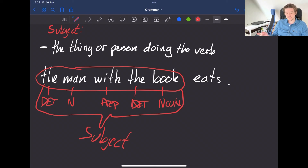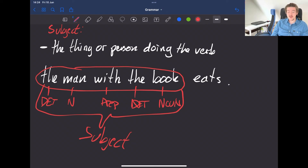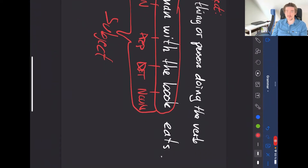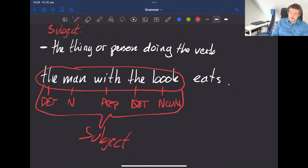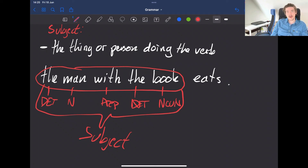I would advise you not to invest too much time in perfectly learning the word class of each individual word. For analyzing sentences, it's much more important to know how words are chained together into sentence functions. The subject is quite simple — it's always the thing or the person doing the verb, and it is usually located to the left of the verb.